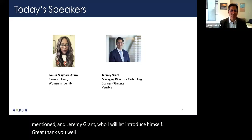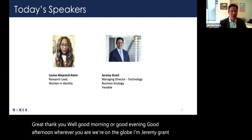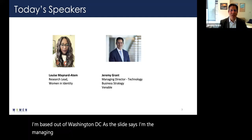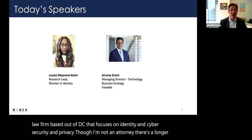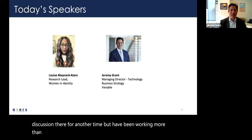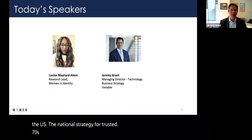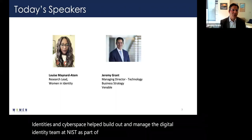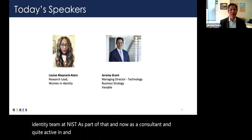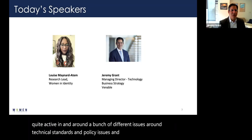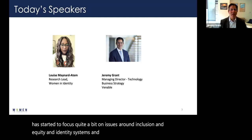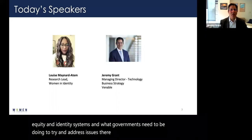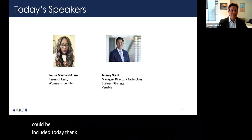Good morning, good evening, or good afternoon, wherever you are around the globe. I'm Jeremy Grant, based out of Washington DC. I'm the managing director of technology business strategy at Venable, a law firm based in DC that focuses on identity, cybersecurity, and privacy — though I'm not an attorney. I've been working more than 25 years in and around the digital identity space, including leading the White House initiative called the National Strategy for Trusted Identities in Cyberspace, and helping build out the digital identity team at NIST. Now as a consultant I lead an organization called the Better Identity Coalition, which has started to focus quite a bit on inclusion and equity in identity systems and what governments need to be doing to make sure these systems work for everybody.